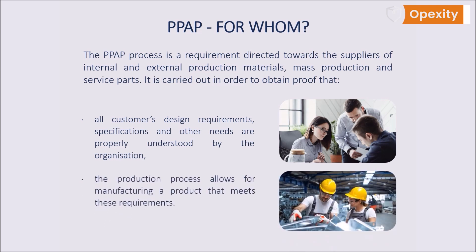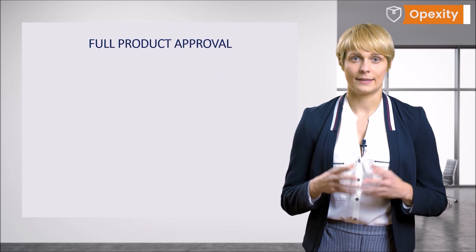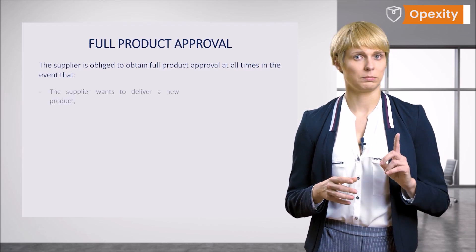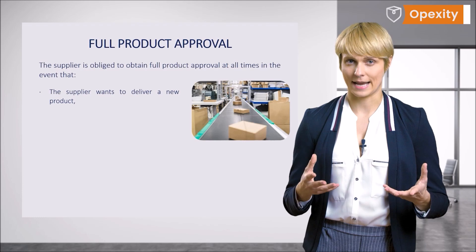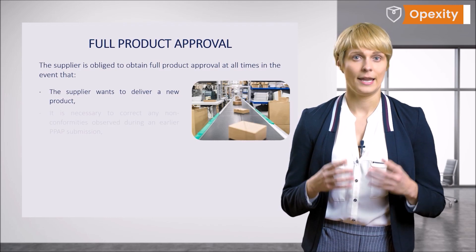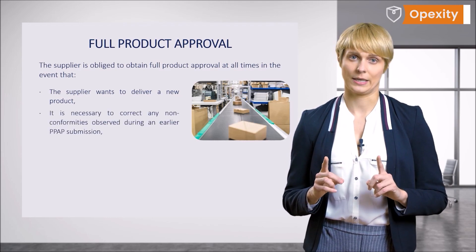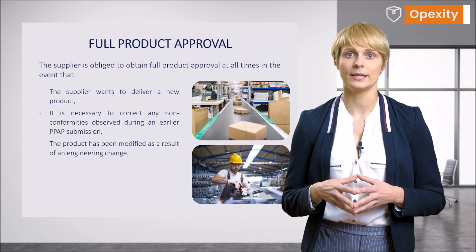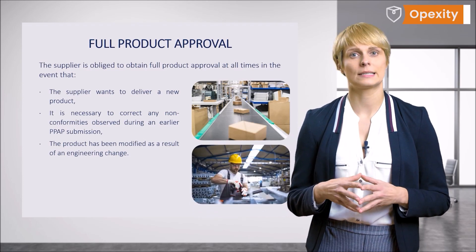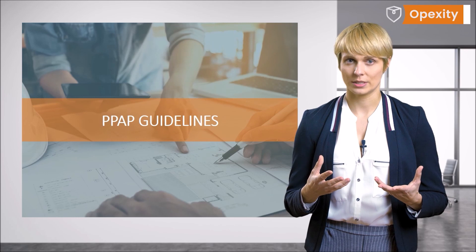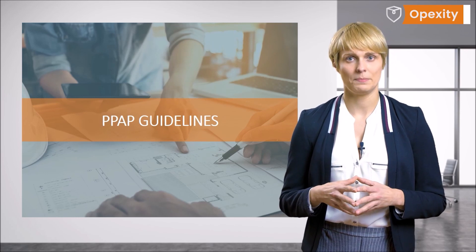The production process allows for manufacturing a product that meets these requirements. Remember that the supplier is obliged to obtain full product approval when the supplier wants to deliver a new product — e.g., a specific part, material, or color not previously delivered to the customer. It is necessary to correct any nonconformities observed during an earlier PPAP submission. The product has been modified as a result of an engineering change, e.g., design records, specifications, or materials. If one of the above-mentioned situations has occurred in your plant, it is high time to start the PPAP procedure.